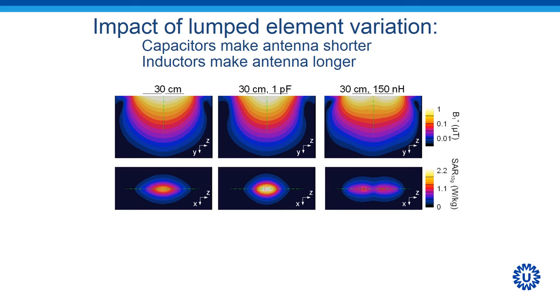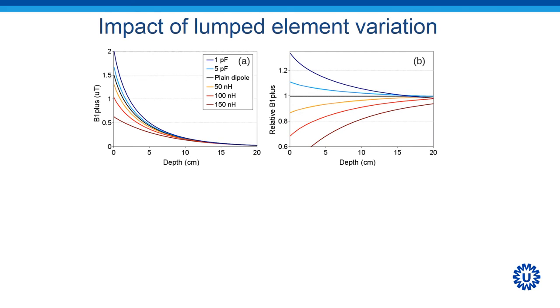If we take a look at the field distributions of such an antenna, we can see that the capacitor in between the segments actually shortens the effective length of the dipole, whereas adding inductors between the segments lengthens the effective length of the dipole. If we look at the profiles along the green dashed lines, we can see that the capacitors enhance the B1 plus field, whereas inductors reduce the B1 plus field.